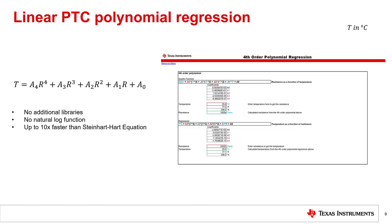Another method to calculate temperature is called the fourth order polynomial regression. Similar to the previous two methods, the regression formula still requires the thermistor's resistance value as it is used multiple times in the equation. Additionally, coefficients A0 through A4 need to be pre-calculated and stored in memory. Not all linear PTC manufacturers provide these coefficients, but the thermistor design tool on TI.com automatically calculates these coefficients for TI's linear thermistor portfolio.